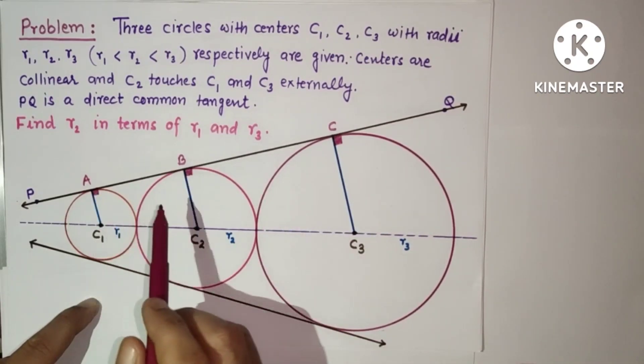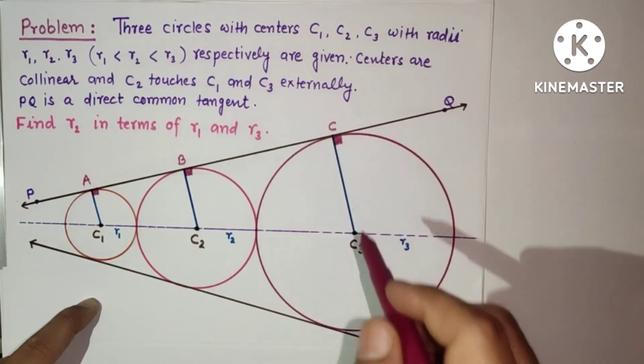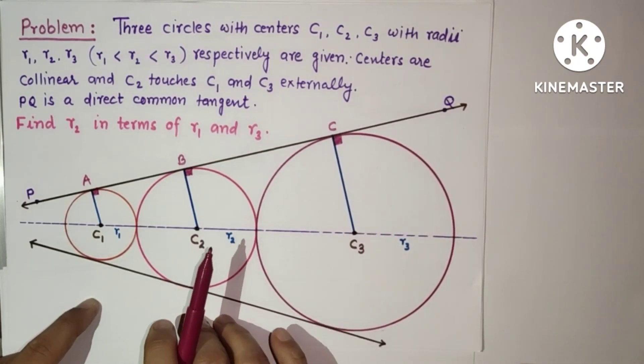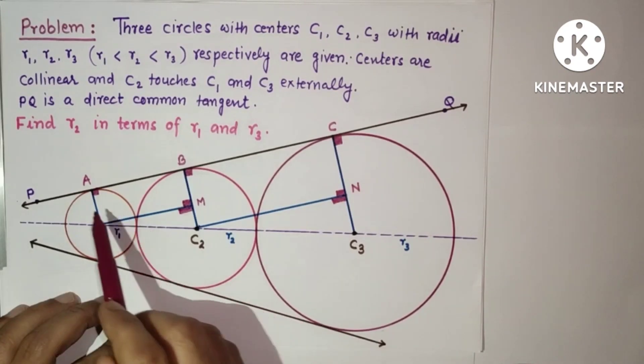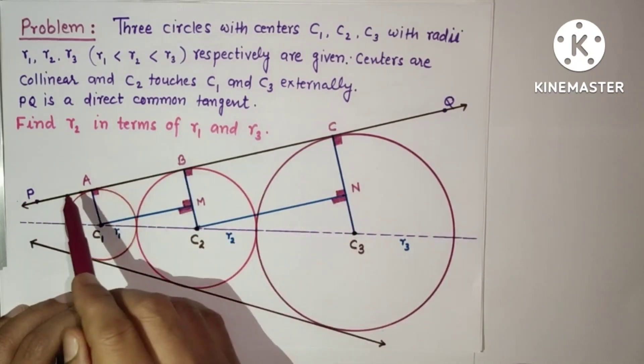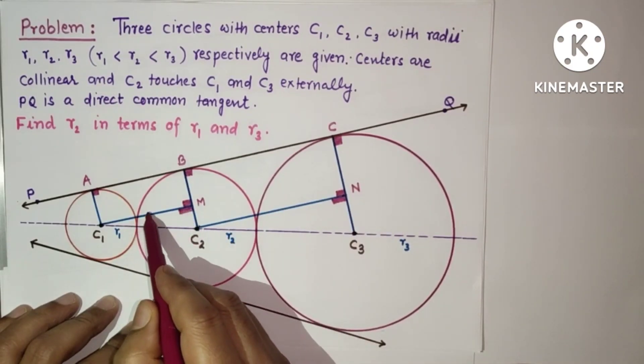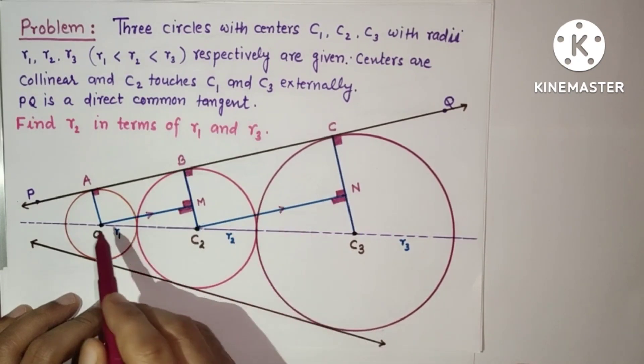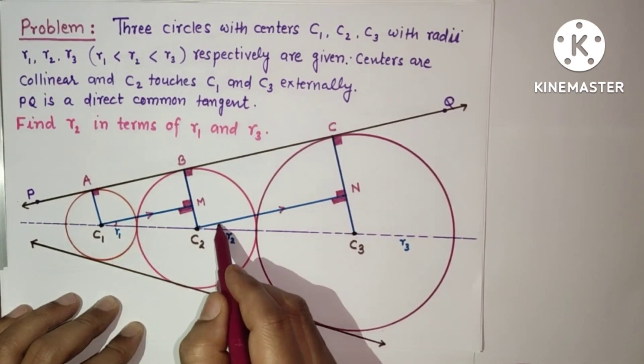Now we draw perpendiculars to BC2 from C1 and to C3 from C2. So we have drawn C1M and C2N perpendicular to BC2 and CC3 respectively. Now this is a rectangle and this is a rectangle, meaning this is parallel to PQ and this is parallel to PQ. Therefore C1M and C2N are parallel. If these two lines are parallel, then this C1C2C3 line will be transversal and therefore this angle will be equal to this angle.